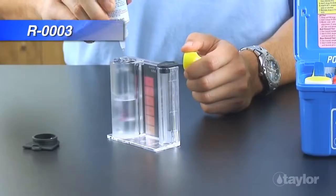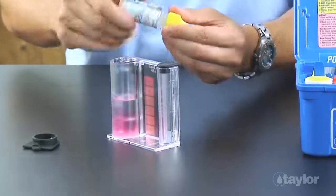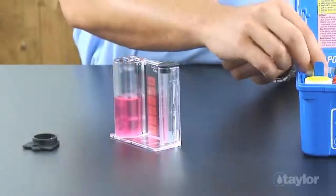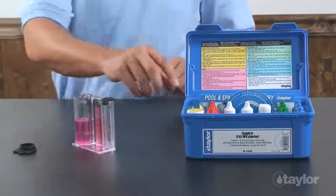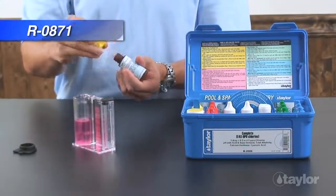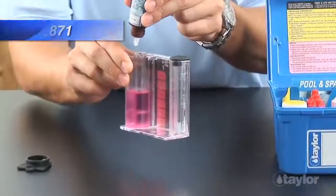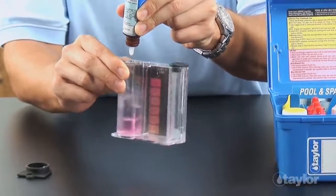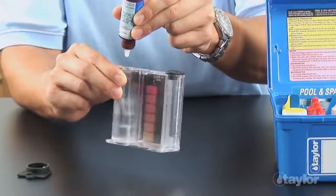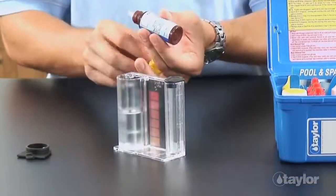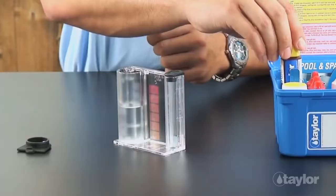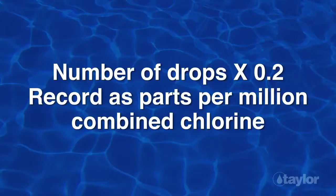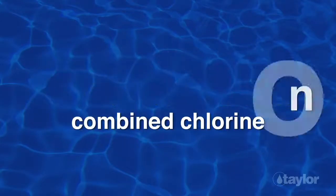Add 5 drops of reagent 3. Swirl to mix. If combined chlorine is present, the sample will turn pink. Add FAS-DPD titrating reagent for chlorine drop-wise, swirling and counting after each drop until the sample goes from pink to colorless. Add one more drop of titrant after the endpoint to be certain the color change is permanent. If the color remains unchanged, do not count this drop.